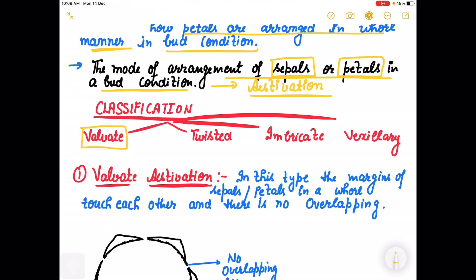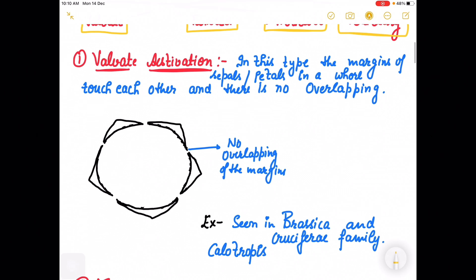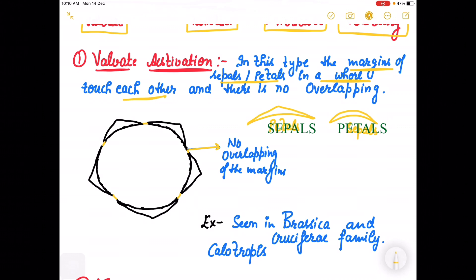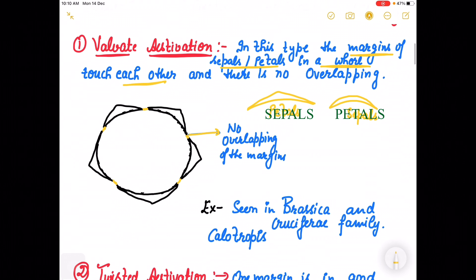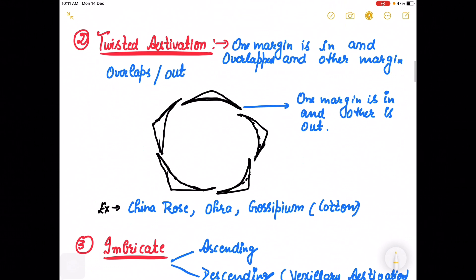Depending on their arrangement, estivation is of four types: Valvate, Twisted, Imbricate, and Vexillary estivation. In valvate estivation, the margins of sepals and petals in a whorl just touch each other. There is no overlapping of the margins at all. This is called valvate estivation and it is a special characteristic of Brassica family and Cruciferae family. You can find valvate estivation in Calotropis or in the mustard plant.